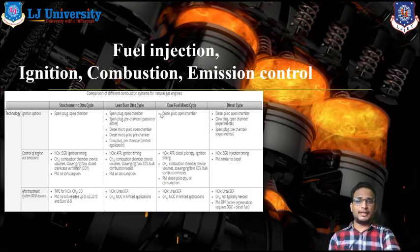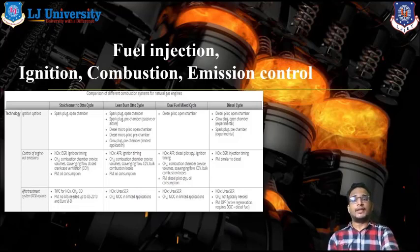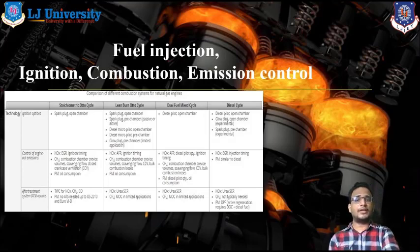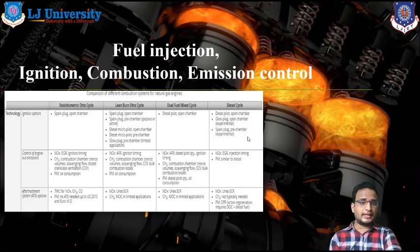Here you can see the basic comparison of the system. First is the Stoichiometric Auto-cycle, second is the Lean-burn Auto-cycle, third is the Dual Fuel Mixed Cycle, and fourth is the Diesel Cycle. The ignition parameters: in Stoichiometric Auto-cycle we use Spark Plug; in Lean-burn Auto-cycle we use Spark Plug as well as Diesel Micropilot system; in Dual Fuel Mixed Cycle we use Diesel Pilot or open chamber system; and in Diesel Cycle we use Diesel Pilot and Glow Plug. Experimentally, we are also using Spark Plug and pre-chamber phenomenon in diesel cycles.